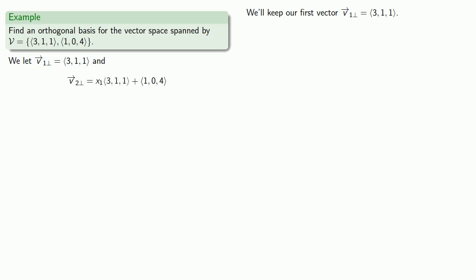and (1,0,4). So, to solve for v̄₂⊥, we'll take the dot product, and by assumption, v̄₂⊥ and v̄₁⊥ will have a dot product of 0. Meanwhile, the dot product of the other vectors is going to work out to be whatever those numbers are, and we'll get the equation 0 = 11x₁ + 7, and so we find that x₁ = -7/11.